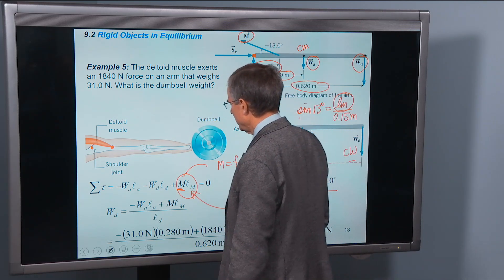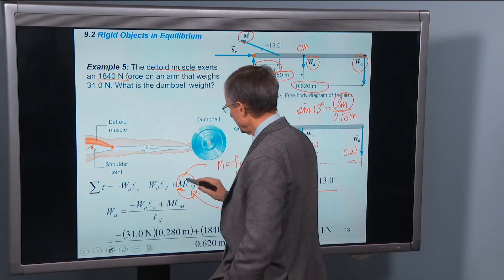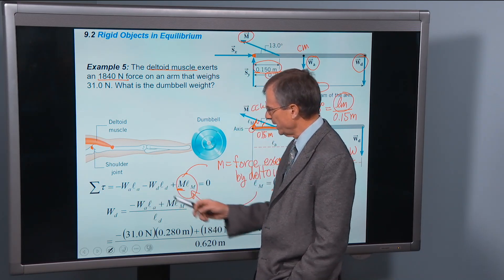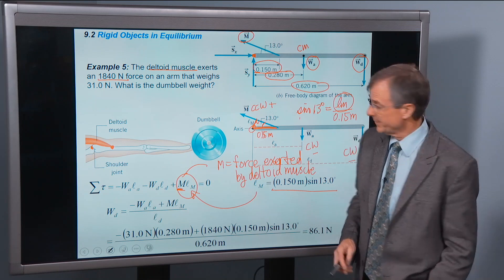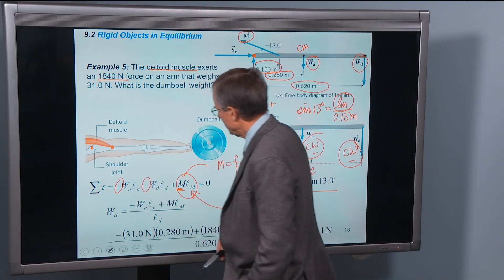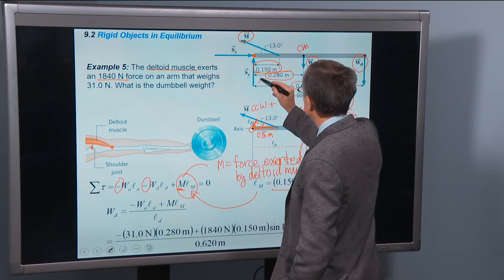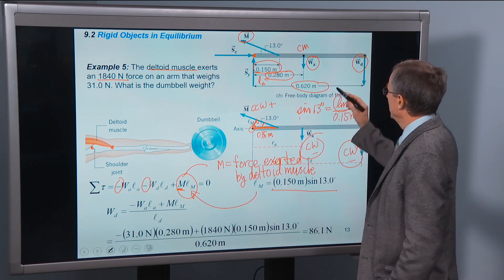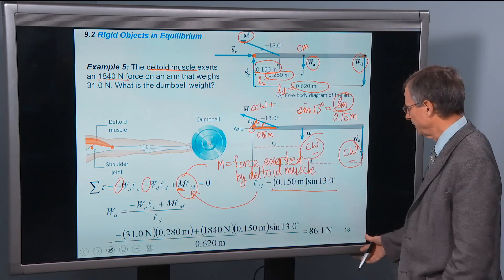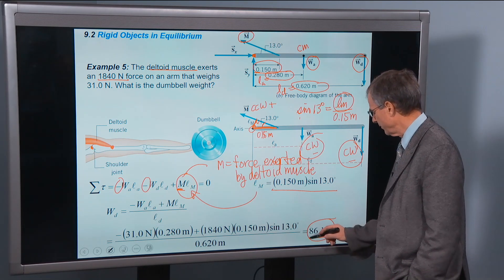Plug that in here. We can actually plug in the force of the deltoid muscle here. We're going to set all these torques equal to zero. These guys both come in, the weight of the arm and the weight of the dumbbell, both come in with minus signs as we talked about before. So both of those are negative. And then all we have to do is plug in the numbers. La we know to be this 0.280. Ld is this whole length of the arm. Plug in the numbers and that gives you the force, or actually the weight of the dumbbell in this particular problem.